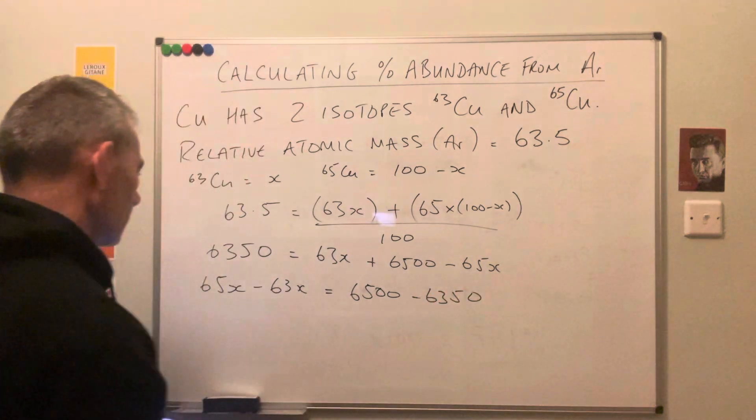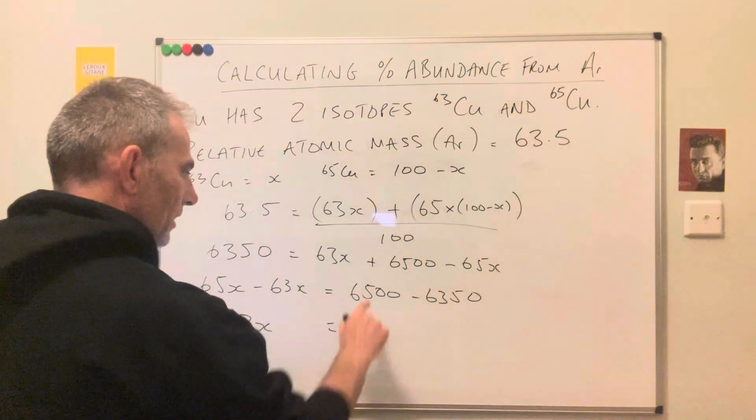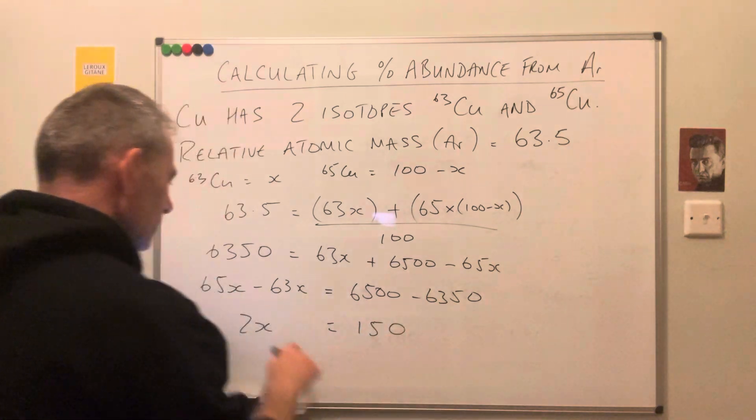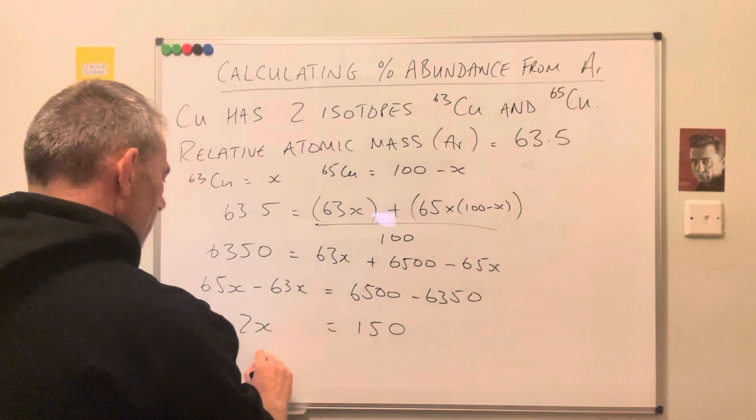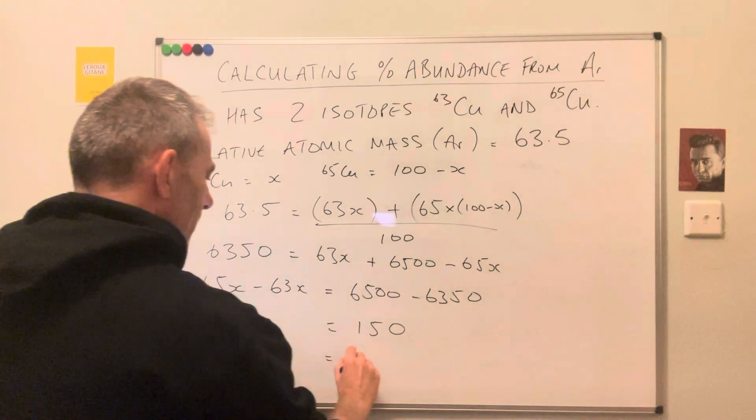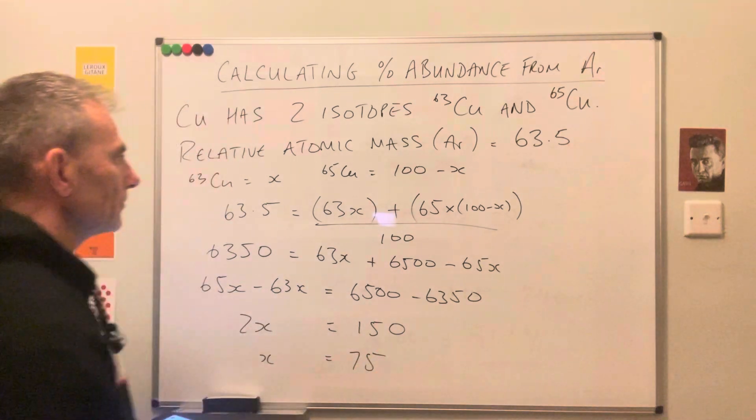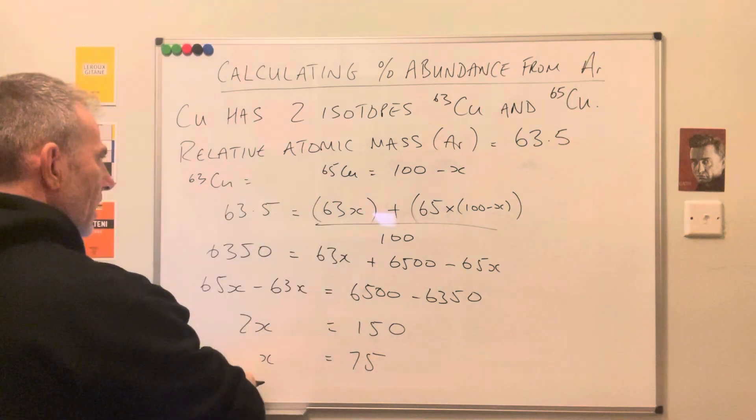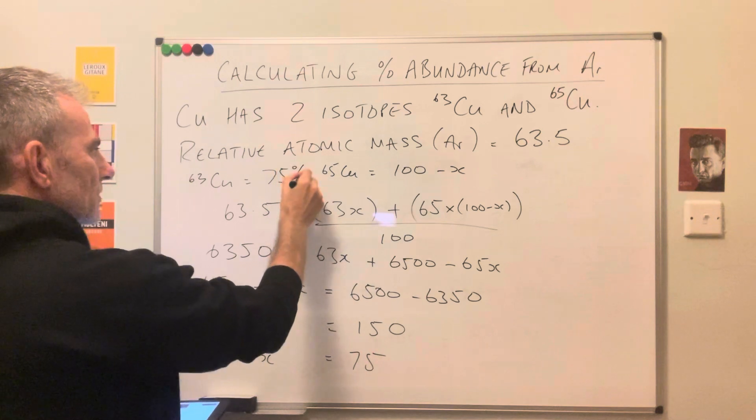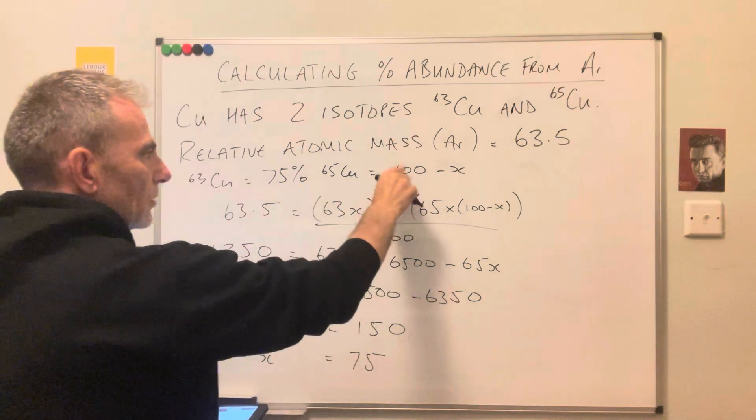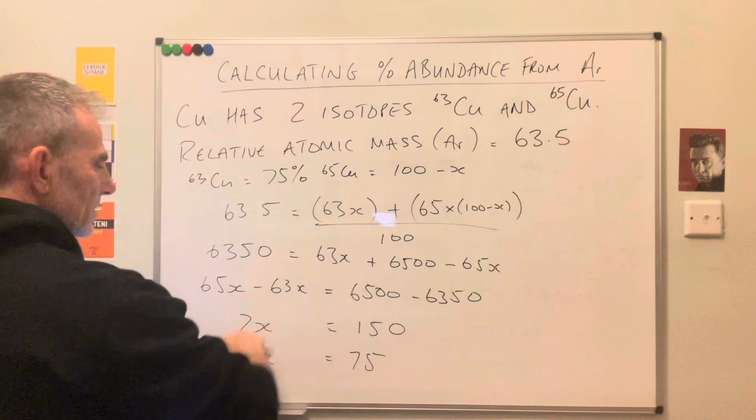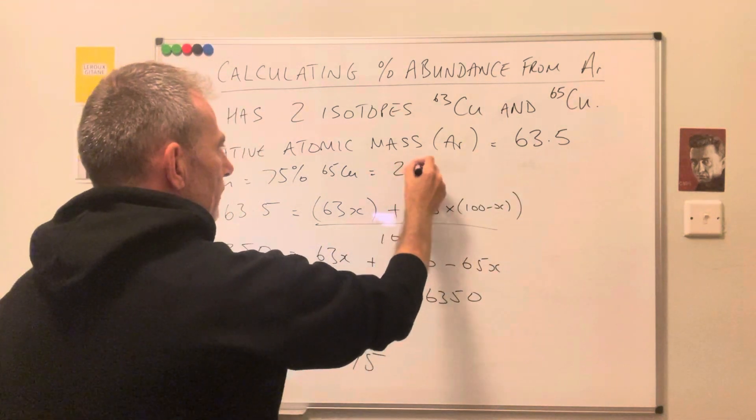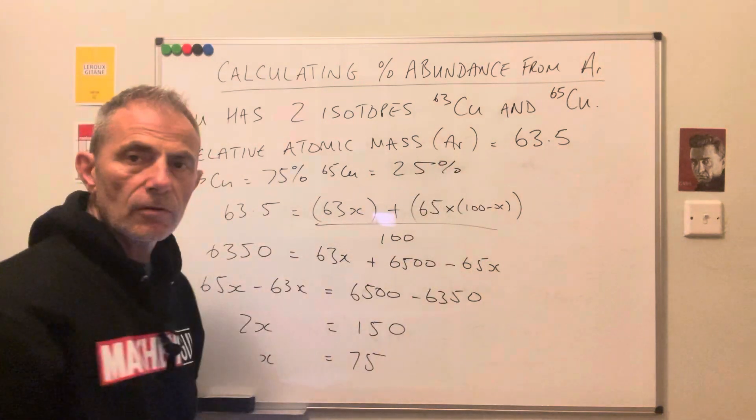So that's obviously 2x, and the difference there is 150. So if 2x equals 150, x equals 150 divided by 2, 75. Okay, so 63 is the x, so that's 75%, and 65 is 100 minus x, 100 minus 75, so that is 25%. And that is how you do those.